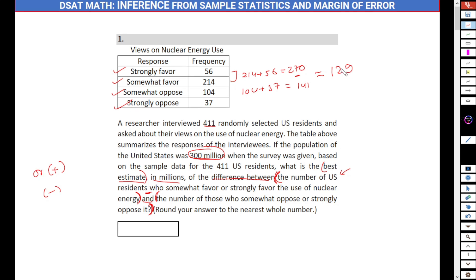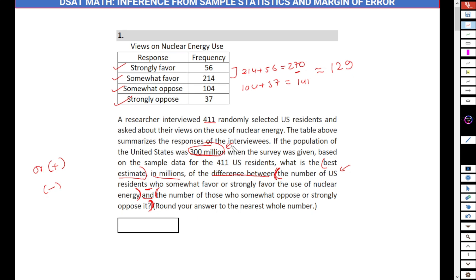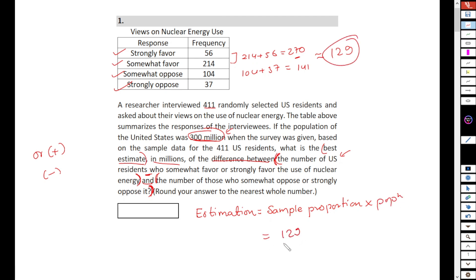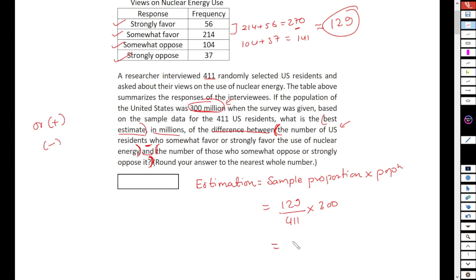Now we have to apply this result to the whole 300 million population. To do that, remember this formula: estimation equals sample proportion into population. The proportion is 129 out of total sample size 411, times the total population of 300 million. If you solve this, you will get around 94 million. So the answer is 94.